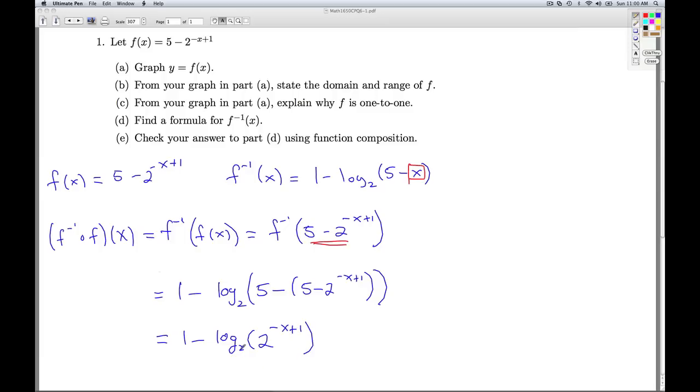Now, log base 2 and the exponential base 2 are inverses of each other. So by definition, I get 1 minus the quantity negative x plus 1. Distributing that subtraction through, I'm subtracting the opposite of x. That just gives me x. I have 1 minus positive 1, which gives me 0, and sure enough, I just have x.